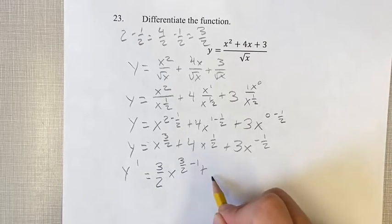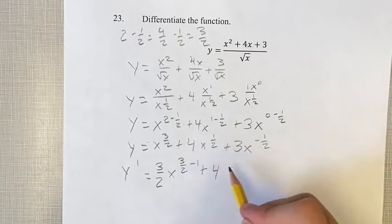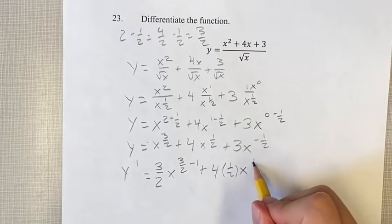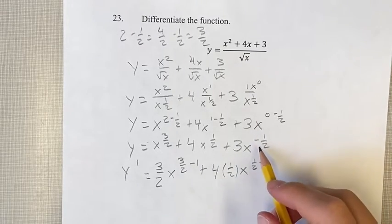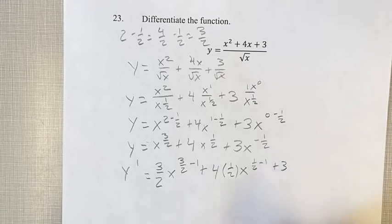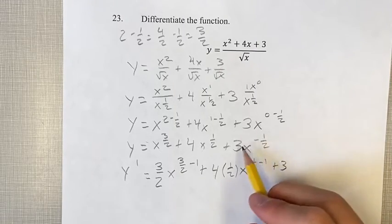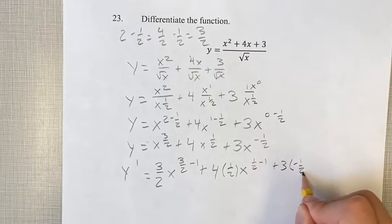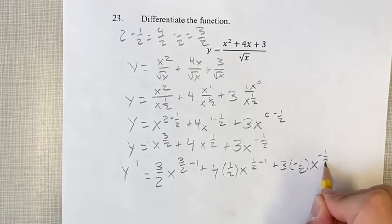Same thing here, get the 4 out in front first, bring the exponent down, subtract 1 from the exponent. Once again, 3 out in front, since it's just the coefficient, bring down the exponent, exponent minus 1.